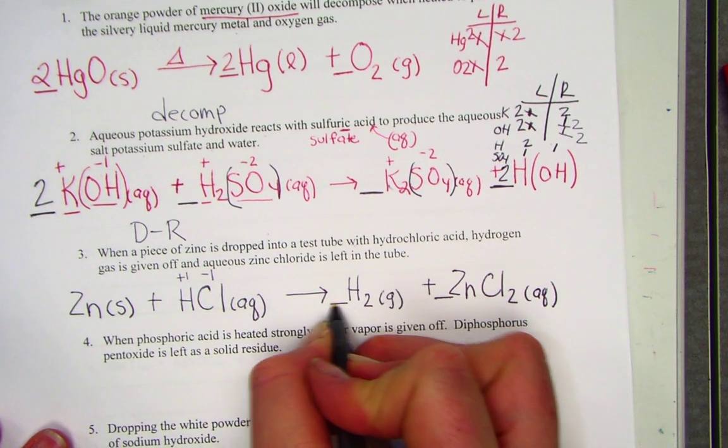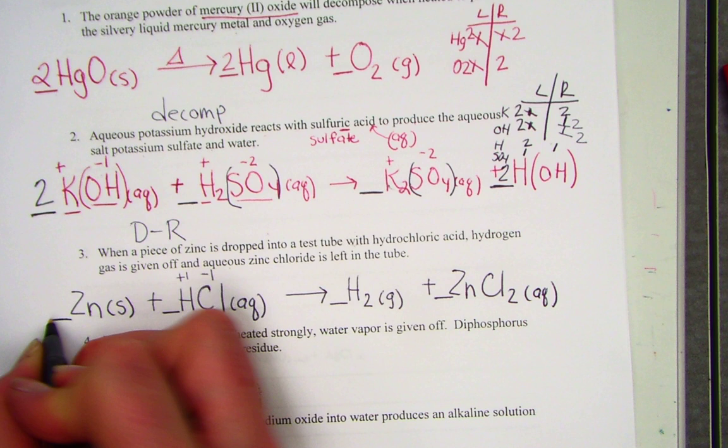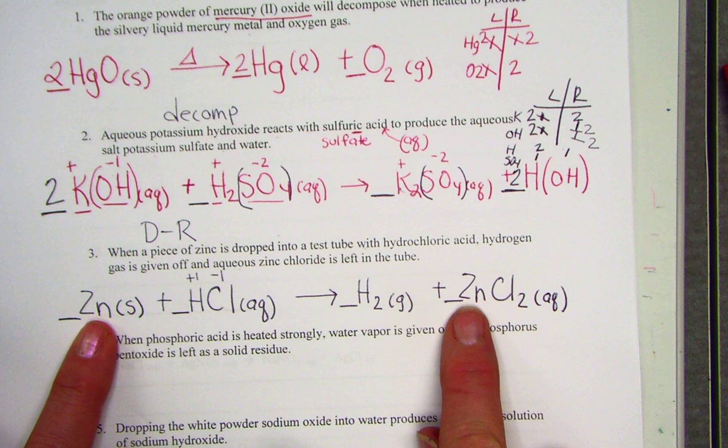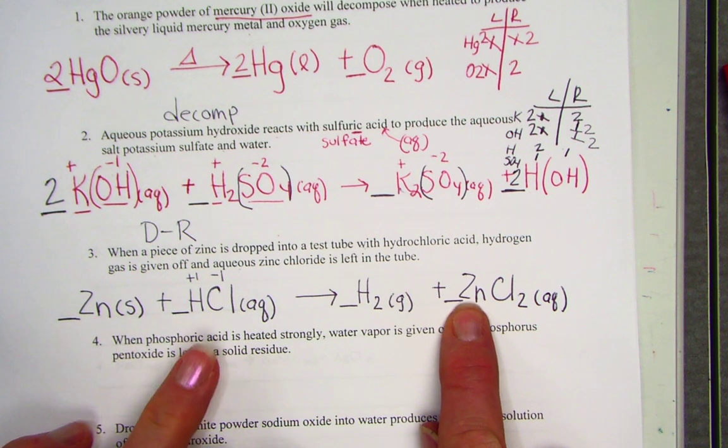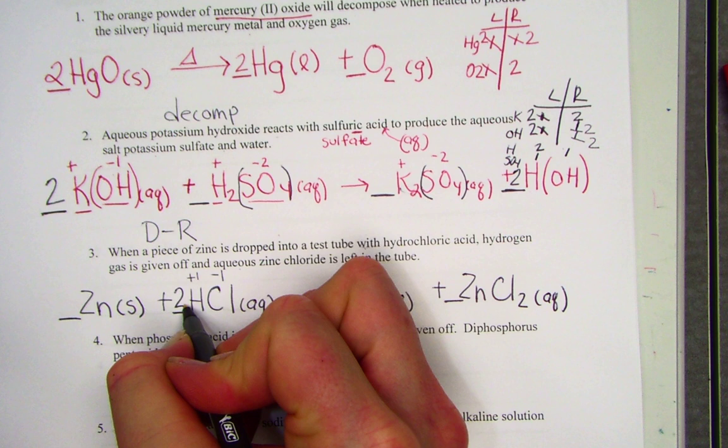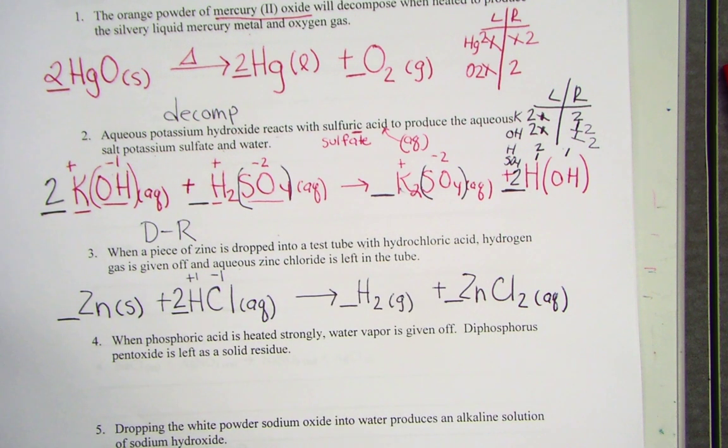We'll balance. And I like to put my coefficient lines in front of the reactants and products. And I'm just going to count. We have one zinc on each side, looking good. But I notice two Hs and two Cls on the right-hand side.